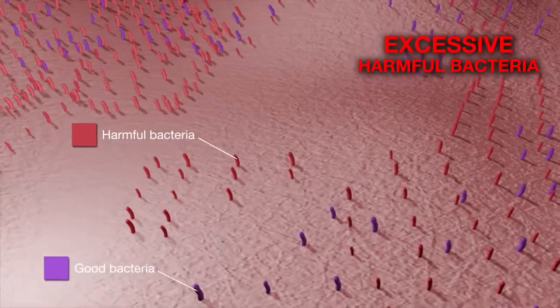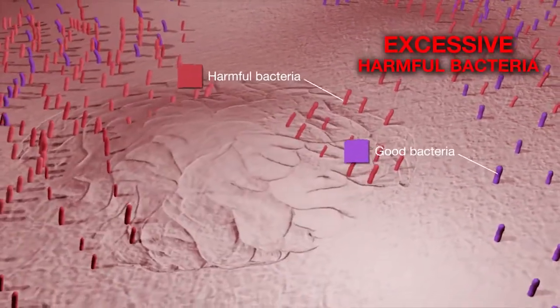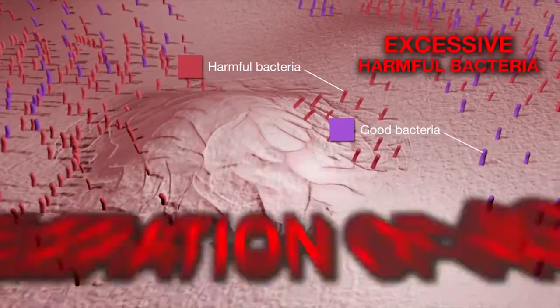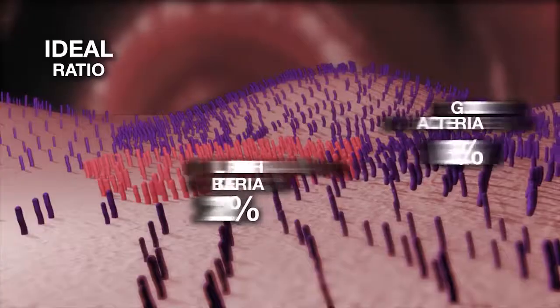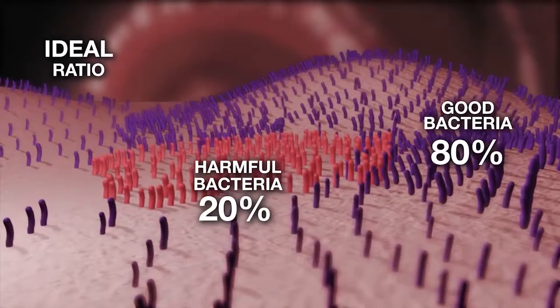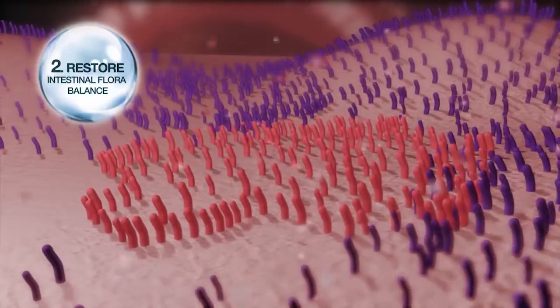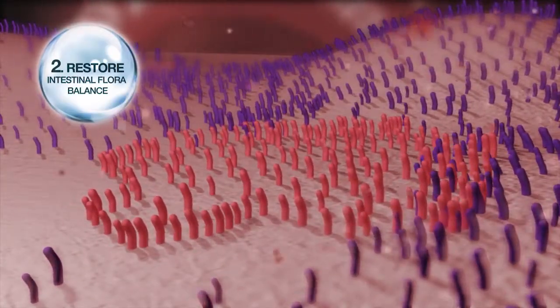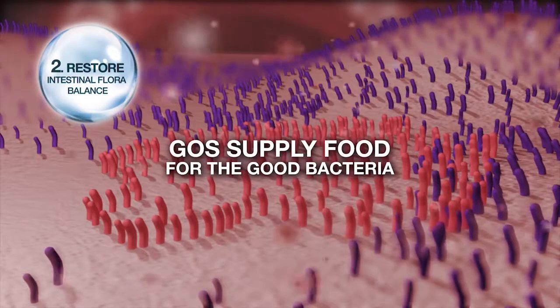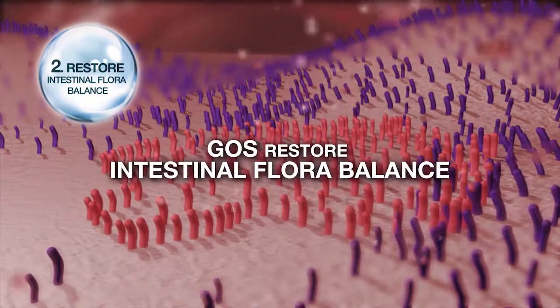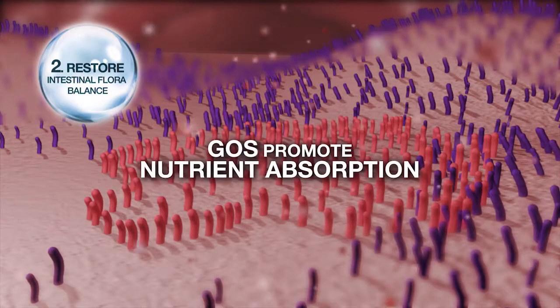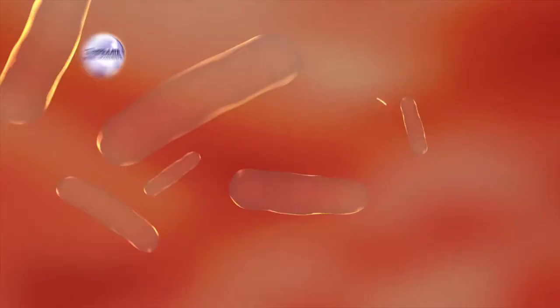Excessive harmful bacteria can produce carcinogenic substances that lead to inflammation and acceleration of aging. The ideal ratio of friendly and harmful bacteria in our intestines is 80 to 20. Step 2. Restore intestinal flora balance. GOS supplies food for the good bacteria and can help restore intestinal flora balance and promote nutrient absorption in the intestines.